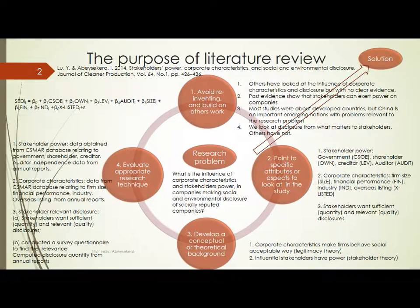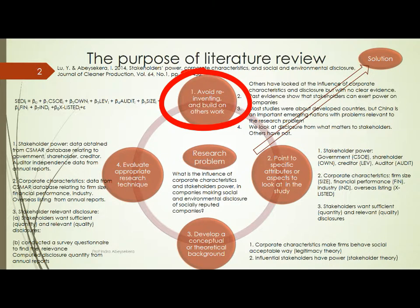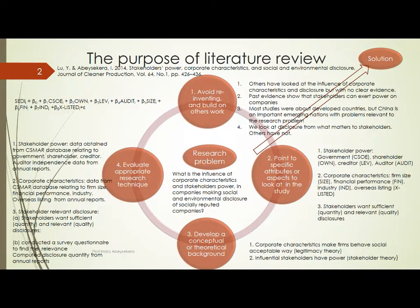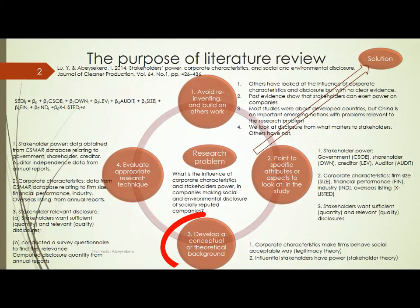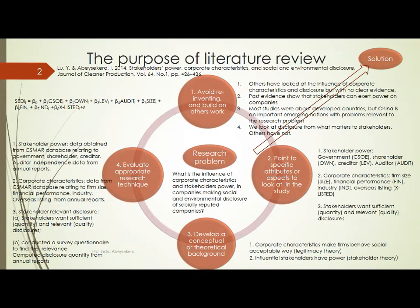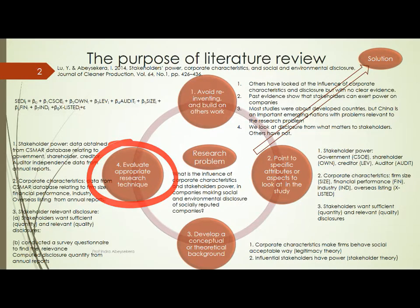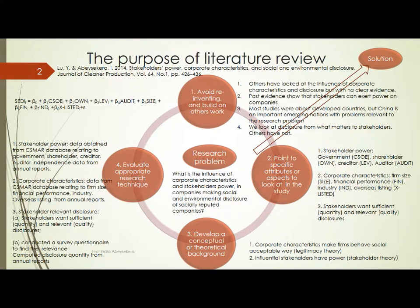There are four purposes or aims when a literature review is conducted. First, to avoid reinventing and build on others' work. Second, we point to specific attributes or aspects to look at in the study. Third, we develop a conceptual or theoretical background using the literature. Fourth, we evaluate appropriate research techniques.